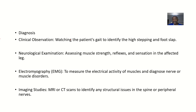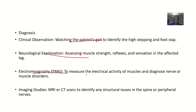Diagnosis is through clinical observation — you ask the patient to walk from the bed to the door, and you watch their gait to identify any high stepping or foot slap. Neurological examination assesses muscle strength, reflexes, and sensation in the affected leg. Electromyography (EMG) measures the electrical activity of muscles and helps diagnose nerve and muscle disorders. Imaging studies such as MRI or CT scan help identify any structural issues in the spine or peripheral nerves.